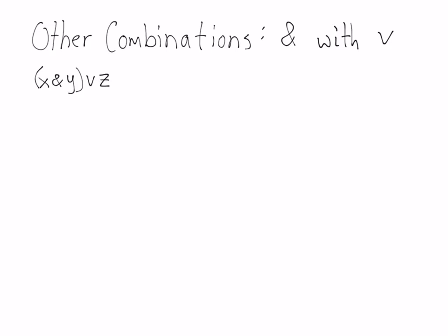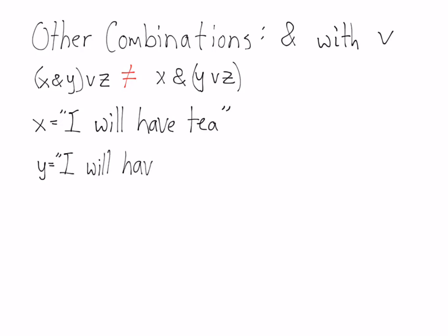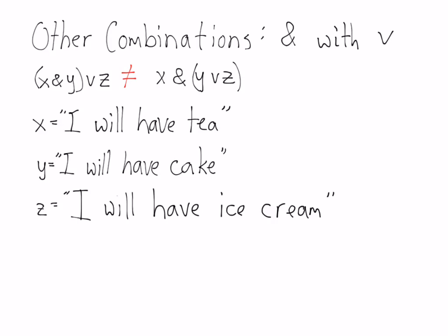Here are some other combinations. Here you have the conjunction with the disjunction. In the first one, you've got brackets around the conjunction, which indicates that you deal with that first. This is not the same as if the brackets are around the disjunction. For example, consider the three statements: 'I will have tea,' 'I will have cake,' and 'I will have ice cream.'